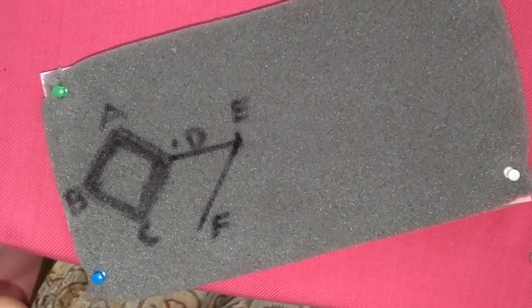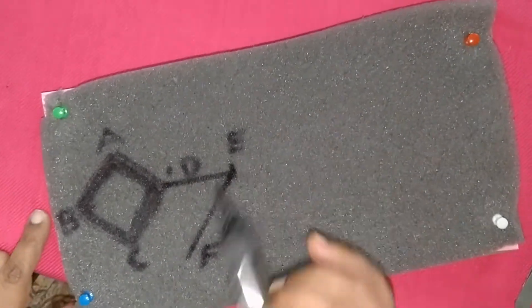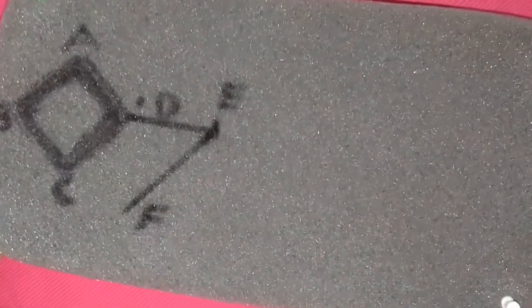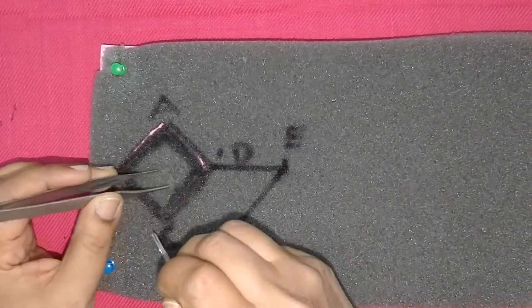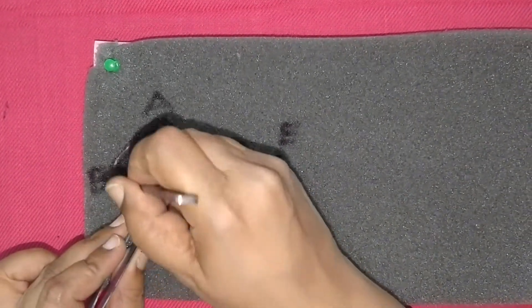This line E, F will be equal in length to the side C, D. Now the defect is created by cutting along the marked line A, B, C, D.